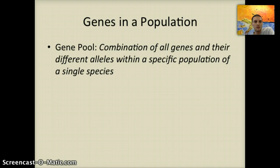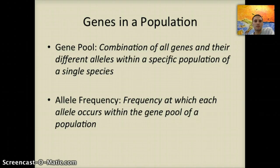If you can imagine a population, all of the different genes that those species have and all of their specific alleles — remember, an allele is a specific type or form of the gene or the trait — the gene pool is all of those alleles within the population. The allele frequency is the frequency at which each of the different types of alleles are present within a gene pool.